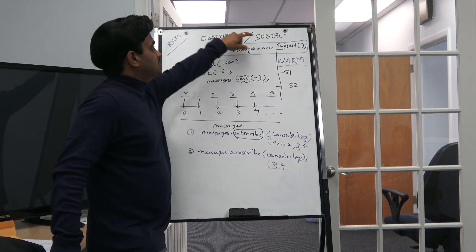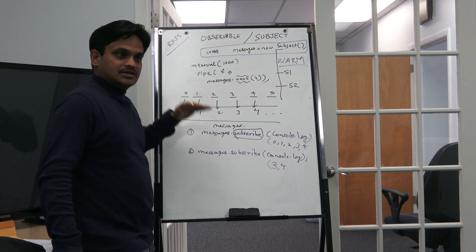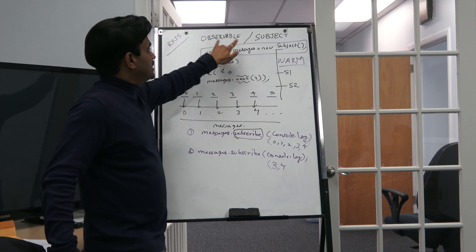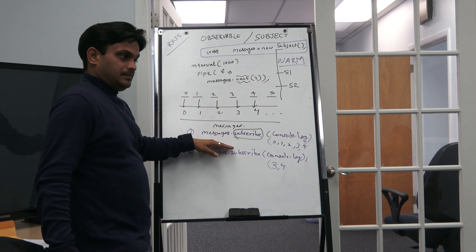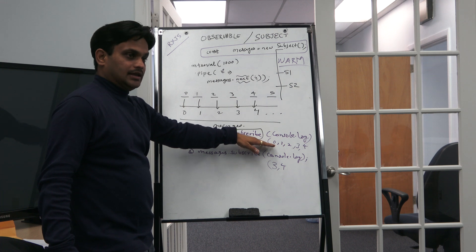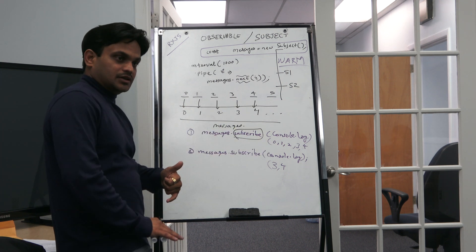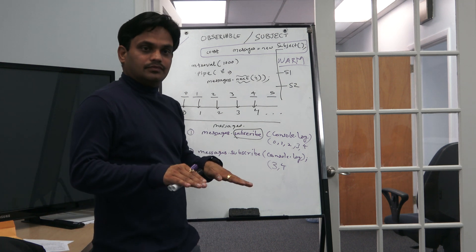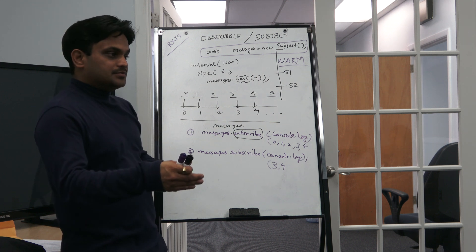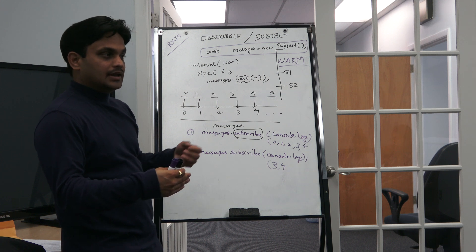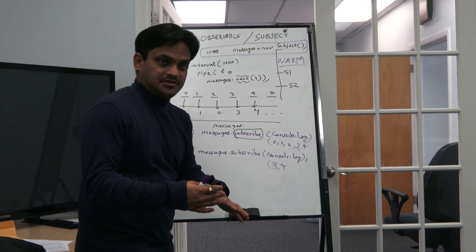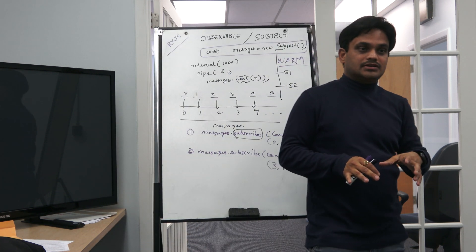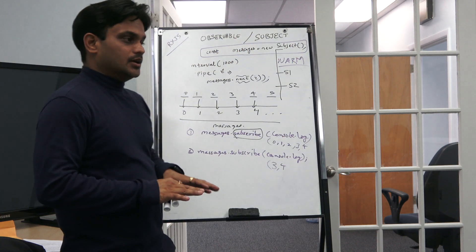To summarize the difference between Observable and Subject in 2-3 lines: First, data starts emitting only when the first subscription happens — this is true for both. Second, in Observable when a new subscriber comes, data starts producing from the beginning; in Subject, the new subscriber only receives data coming next after their subscription. Third, Subject has a list of all subscribers — it has state — and you can push data to all of them using `next`.